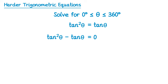Now that we have all terms on the left and 0 on the right, we're going to factorise. Both terms have tan theta in them, so we factorise out tan theta. We've got tan theta times a bracket, and this equals 0. To get tan squared theta we multiply tan theta by itself, so we need a tan theta in the bracket, and to get negative tan theta we multiply by negative 1.